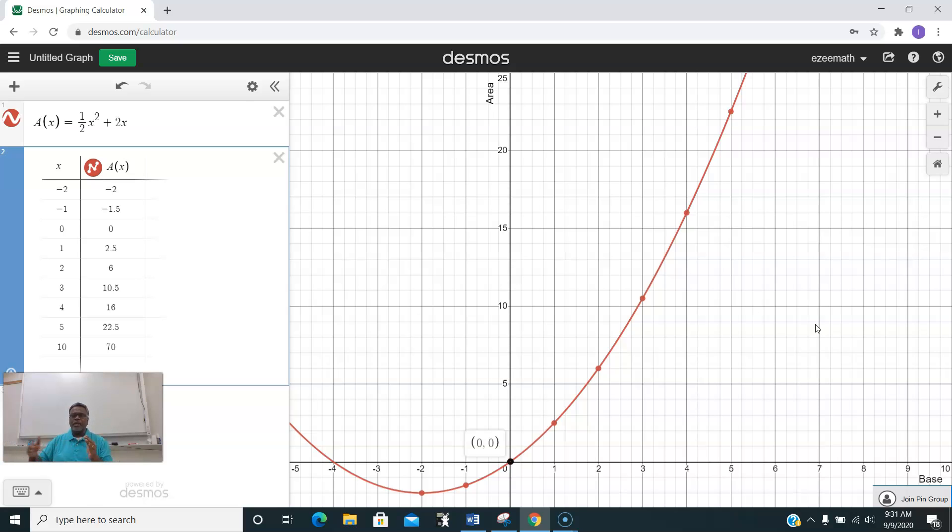X can take any of these numbers; there is no restriction because the graph is going higher and higher. Correspondingly, the range also starts from zero and goes all the way up. Remember, the domains are your x values and the range is the y values.